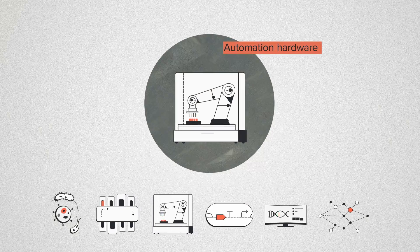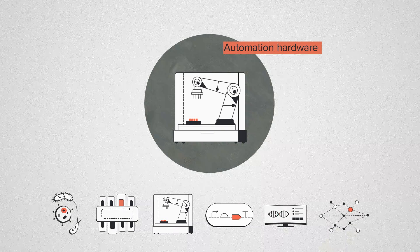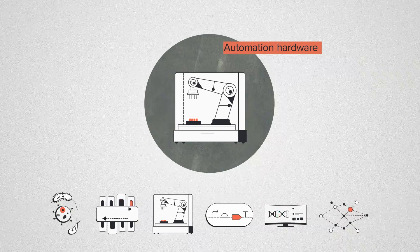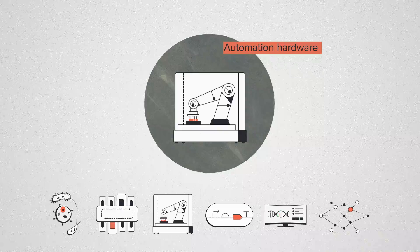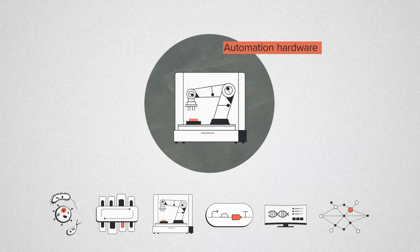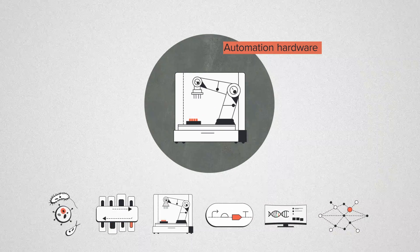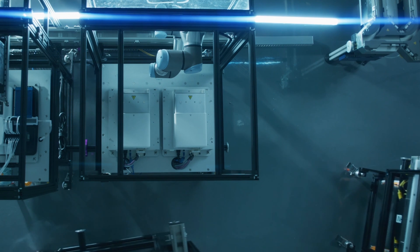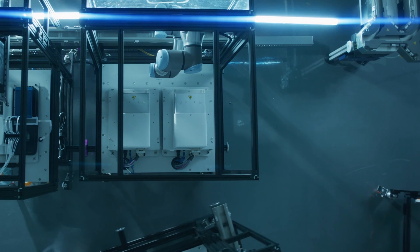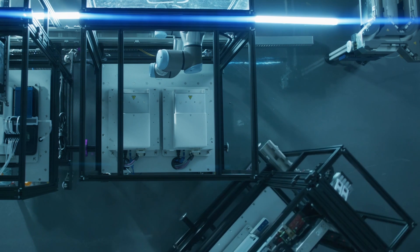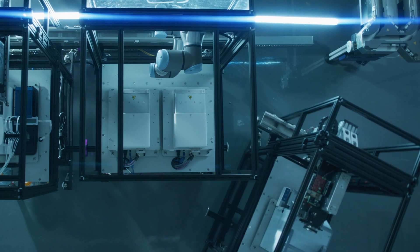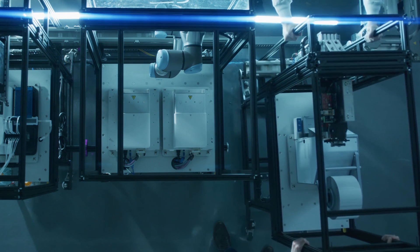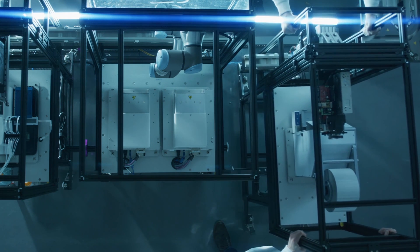Automation hardware is all the physical infrastructure that we use to perform those methods. This includes hardware familiar to most biologists like liquid handling robots and plate readers, as well as custom robotics like the RACKs — reconfigurable automation carts that can be mixed and matched into a specific workflow as the project requires.